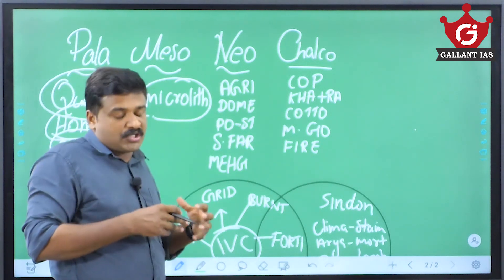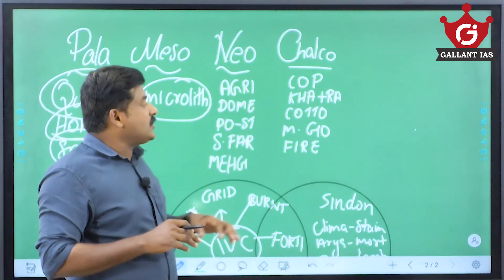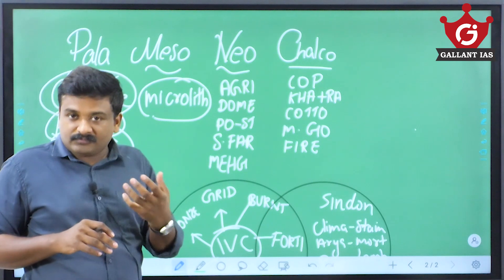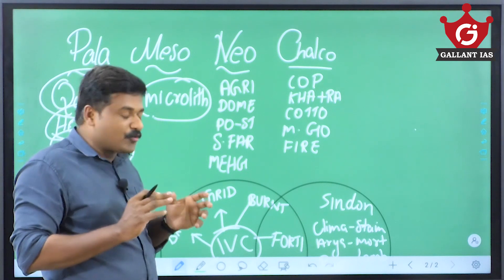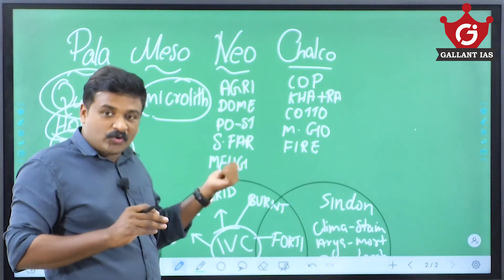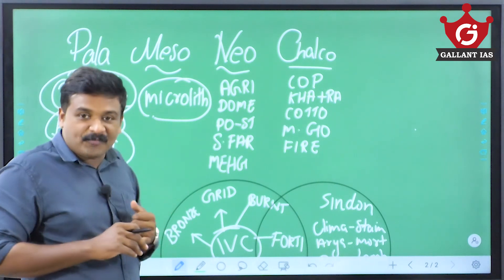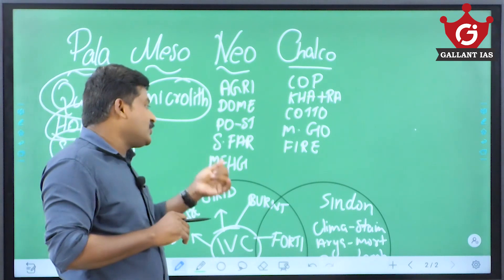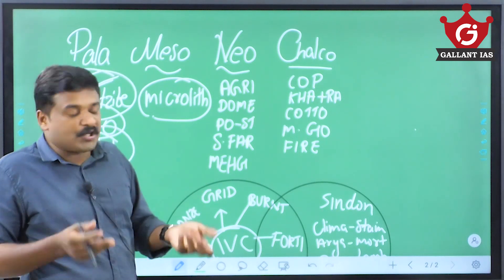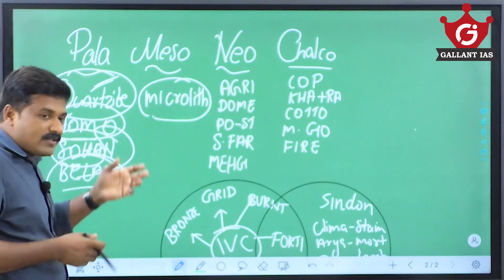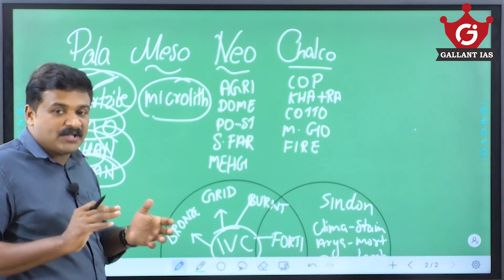Then comes the chalcolithic culture, which is a copper age culture — for the first time, copper was the metal used here. Different crops were cultivated including cotton, which was produced during this period. This culture is known for mother goddess worship and also for the discovery of fire altars, indicating fire worship was also present. These are some basic features important for UPSC.